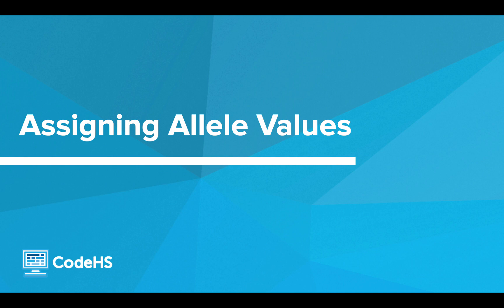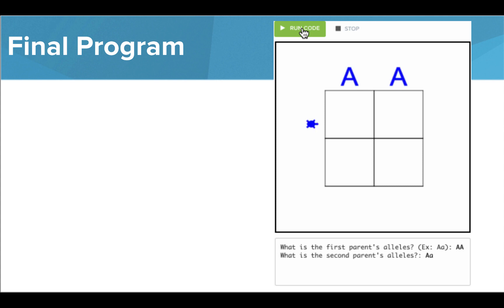Hi! Now that we've figured out how to place our allele values on our canvas, let's find out how to get these values from the user. As you can see, in our final program, we want the user to enter the allele values that are printed onto the screen. Let's see how to do this.